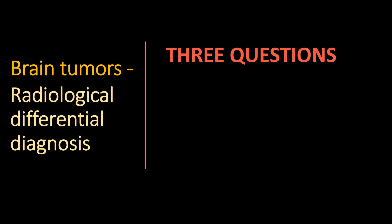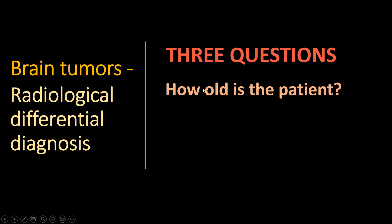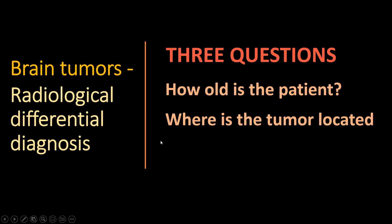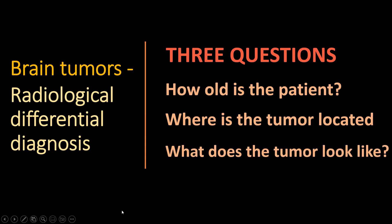So we have ruled out acute emergencies and considered non-neoplastic lesions. The next step is generally MRI, although you can start the differential diagnosis on CT. My approach for the differential diagnosis of brain tumours involves three questions, the first two being most important — and for those two you don't need to look at the images at all. The first two are: how old is the patient, and where is the tumour located? The last question is what does the tumour look like, but that's the least important.